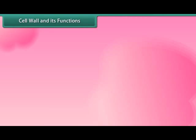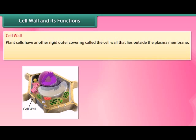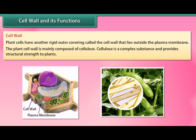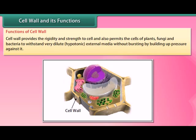Plant cells have another rigid outer covering called the cell wall, which lies outside the plasma membrane. The plant cell wall is mainly composed of cellulose, a complex substance that provides structural strength to plants. The cell wall provides rigidity and strength to the cell, and also permits the cells of plants, fungi, and bacteria to withstand very dilute hypotonic external media without bursting by building up pressure against it.